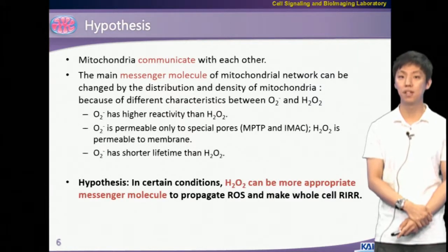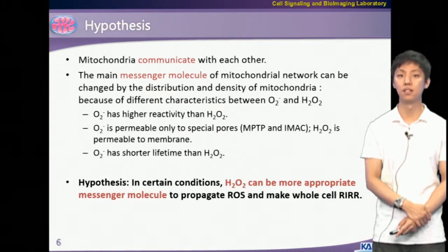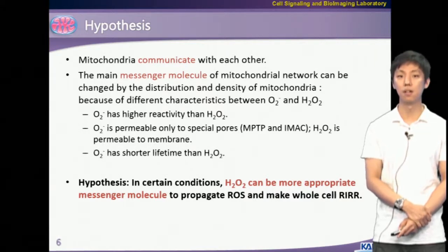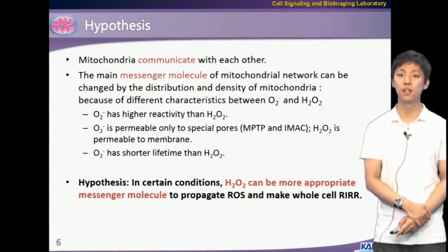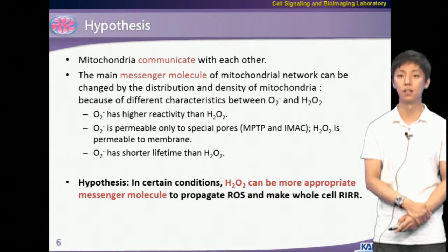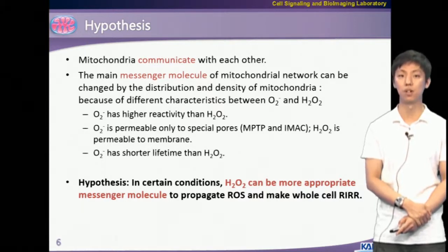These reports contradict the general understanding that the inter-mitochondrial messenger molecule for RIRR is superoxide. So we hypothesize that under certain conditions, hydrogen peroxide might be a more appropriate messenger molecule to propagate ROS and cause whole-cell RIRR because of its longer lifetime in the cytosol and higher permeability in membrane lipids.